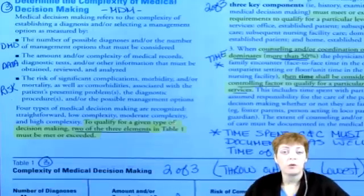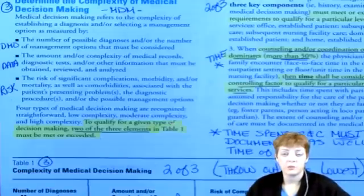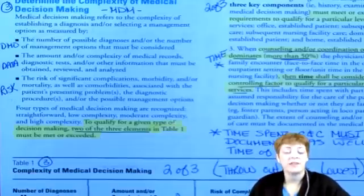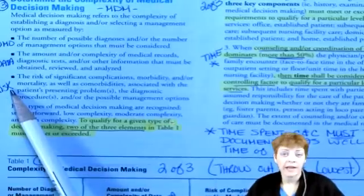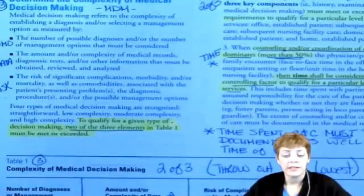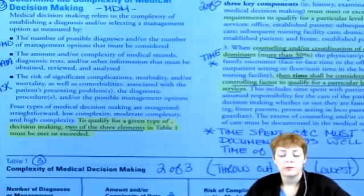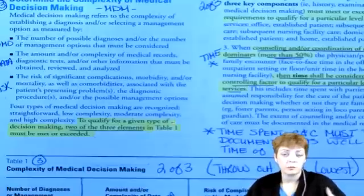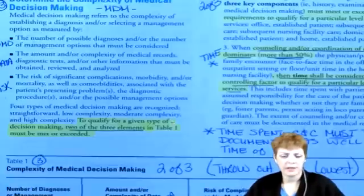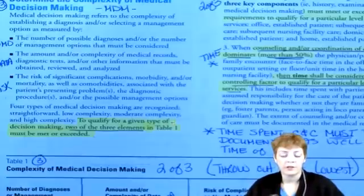Data could be obtained — they might write an order for an x-ray, that's data — or they might review an x-ray on a subsequent visit, that's also data. Sometimes with phone calls, if a physician documents a call with a patient, they can't get credit for it that day, but when the patient returns for the next visit and they review that phone call conversation, that can count toward data. The third element, risk, covers significant complications, morbidity and/or mortality, as well as comorbidities associated with the patient's presenting problems, the diagnostic procedures, and the possible management options. Some of it seems duplicative with DMO, but when you break it down and do it often enough, it makes sense.